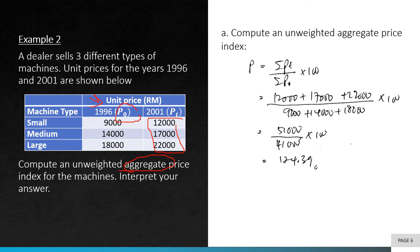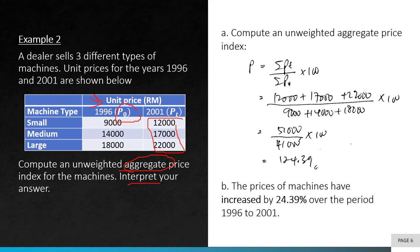To interpret the finding: the index is 124.39, which is above 100, indicating an increase. The magnitude is 124.39 minus 100 equals 24.39. Therefore, the prices of machines have increased by 24.39% over the period 1996 to 2001.